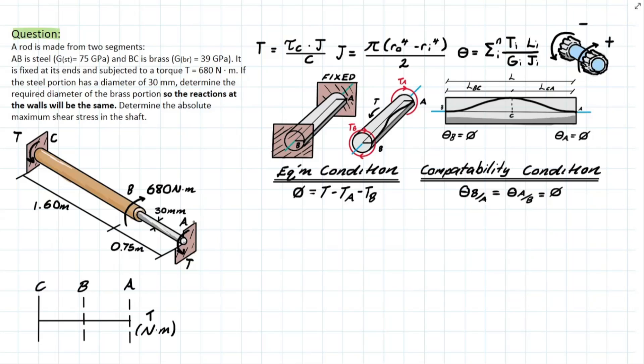Generally, a problem like this would be indeterminate, but we're given a condition that it wants both these reactions at both these ends to be exactly the same. And we recall from our previous video that we have equilibrium conditions and we have compatibility conditions. So if we just match these conditions to what we have in this problem, it's going to make our life really easy.